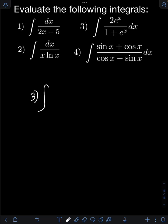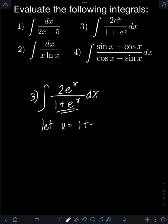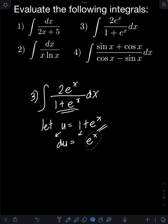For number 3, we have the integral of 2e raised to x over 1 plus e raised to x, dx. Let's use u-substitution. Let u be equal to the denominator: 1 plus e raised to x. Get the derivative of both sides. Derivative of u is du. The derivative of 1 is 0, plus the derivative of e raised to x is e raised to x, so du equals e raised to x dx.